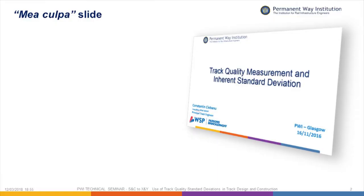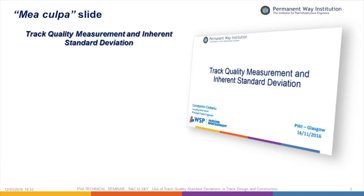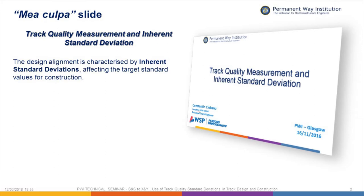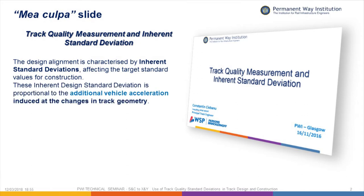This software is often used in the track design process to calculate what we call the inherent standard deviations. There are some technical documents that suggest that the TGSD calculator is based on dynamic modeling and on computing the vehicle accelerations caused by the design. In my presentation I supported this statement, which was suggesting that the inherent design standard deviations are proportional to the additional vehicle acceleration induced by the changes in track geometry.